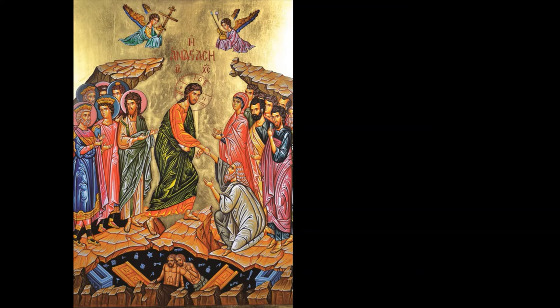In the middle of the icon, apart from Adam, we have two groups of persons. The ones to the left are the prophets of the Old Testament, and the ones to the right are the saints and martyrs of the New Testament.